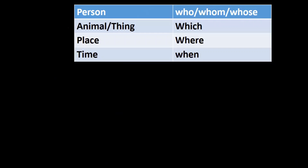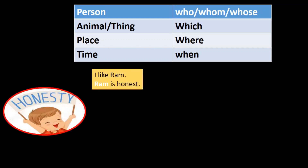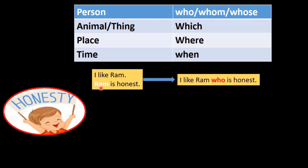Now the question is, in the case of a person, where do we use who, whom, and whose? Let's see with examples. I like Ram. Ram is honest. In this example, in the second sentence the word Ram exists in subject position — that is, in the beginning of the sentence. So if the subject is in the subject position, we use the relative pronoun who. And the answer is: I like Ram who is honest.